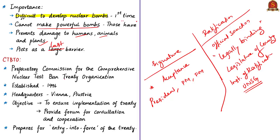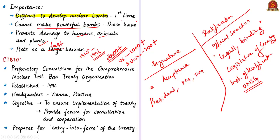Between 1945 and 1996 there were over 2,000 nuclear tests conducted by various countries. The United States conducted more than 1,000 — almost 50% of the total. The Soviet Union did 700-plus, France 200-plus, and the UK and China 45 each. Three countries also carried out nuclear explosions after 1996: India and Pakistan, which tested in 1998, and North Korea, which tested in 2006 and 2009.